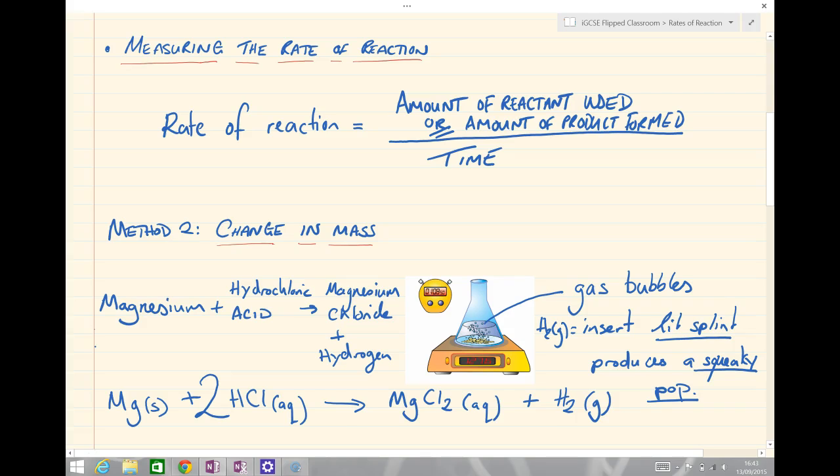So there we go, Method 2: change in mass. Here we can measure how much hydrogen gas is produced, making sure that we take a stopwatch to check the time. We'll now move on to Method 3, the final method, which involves making gas again.